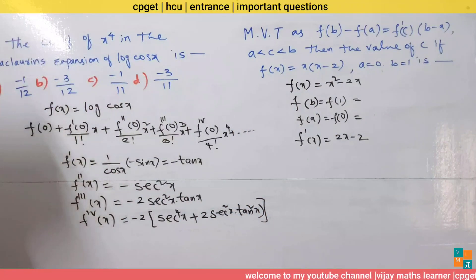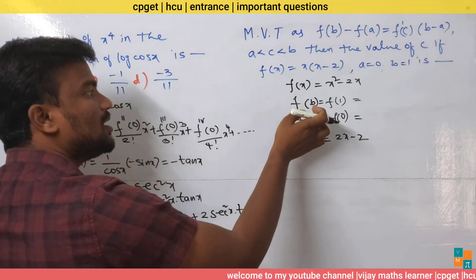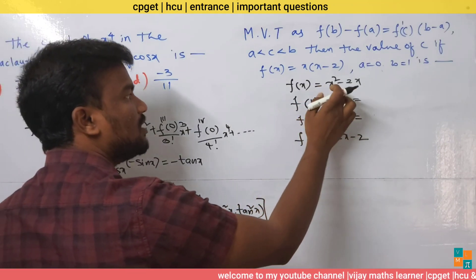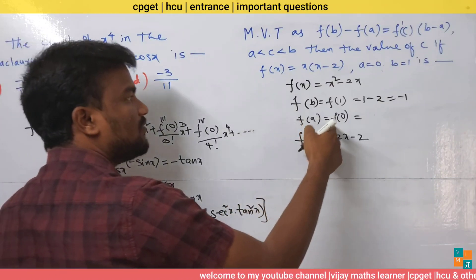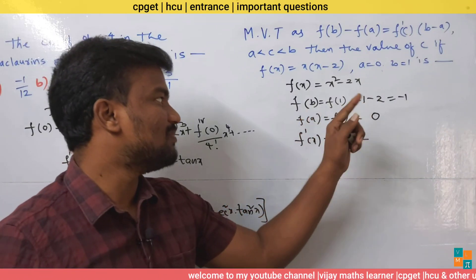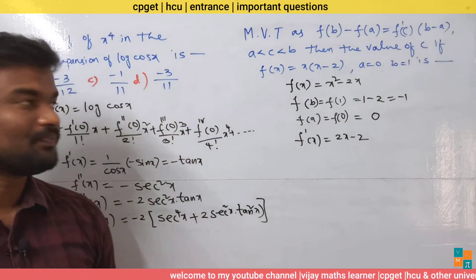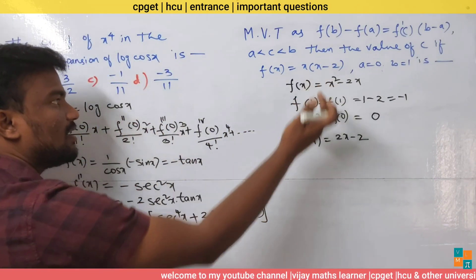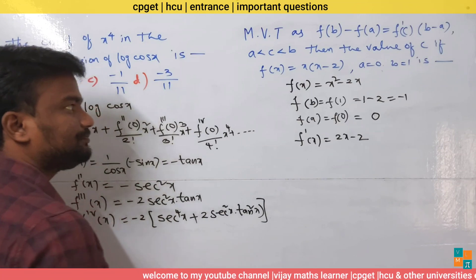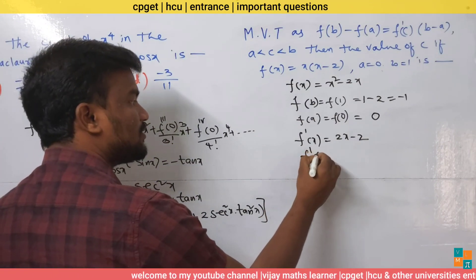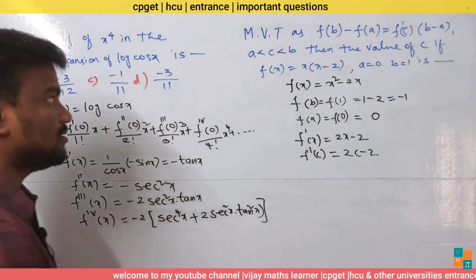The function is f(x) equals x² − 2x. f(b) equals f(1) equals 1 − 2 equals −1. f(a) equals f(0) equals 0. The derivative f'(x) equals 2x − 2, so f'(c) equals 2c − 2.